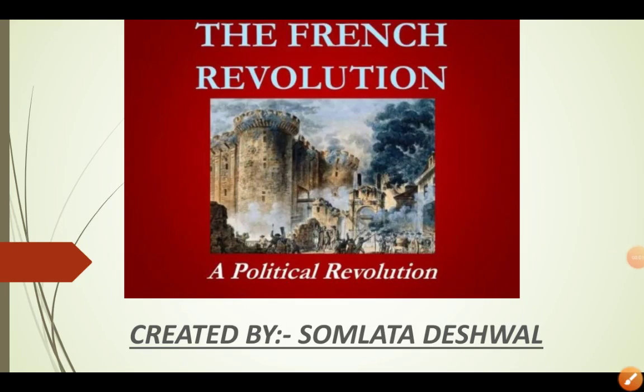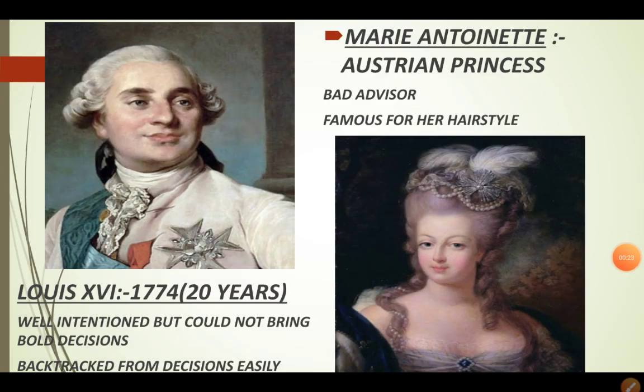Good morning students, welcome back to my YouTube channel. Here I come with your history chapter French Revolution Part 2. In our first video, I started the story of King Louis XVI, who was a very despotic and absolute king, who married an Austrian princess — a bad advisor — when Louis XVI became the King of France.